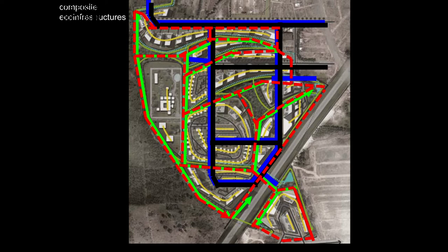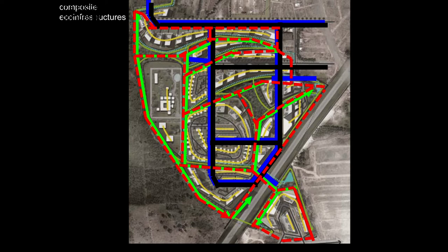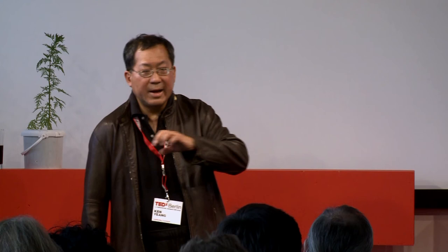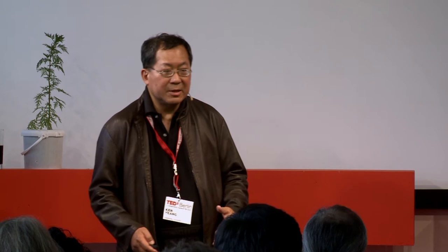Whenever you have a road cutting through a wild area or a rural area, we try to vegetate it and bring it across, so the species can move from one part of the land to the other. That's the idea of integrating the four eco-infrastructures into a single whole.